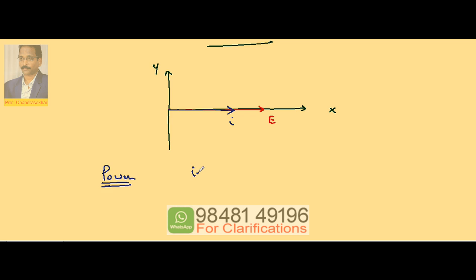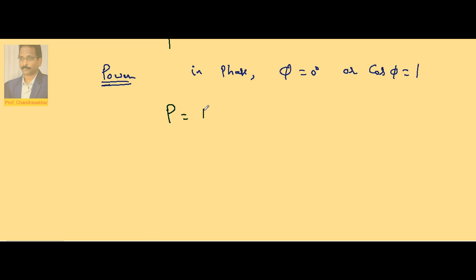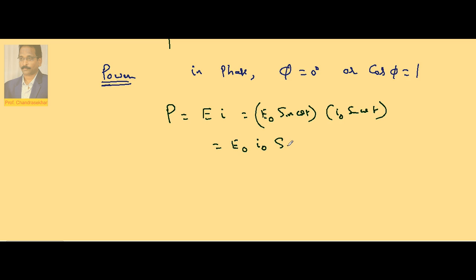Since EMF and current are in the same phase, φ = 0, which means cos φ = 1. The instantaneous power is P = E × I = E₀ sin(ωt) × I₀ sin(ωt) = E₀I₀ sin²(ωt).